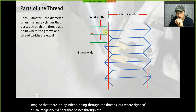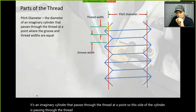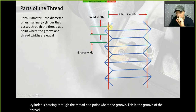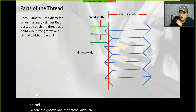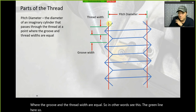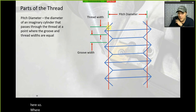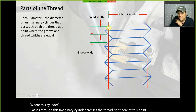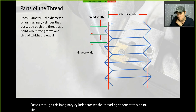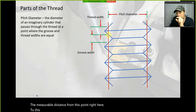This imaginary cylinder passes through the thread at a point where the groove and the thread width are equal. Where this imaginary cylinder crosses the thread, the measurable distance from one side to the other — let's say it measures exactly 0.1 — is the pitch diameter.